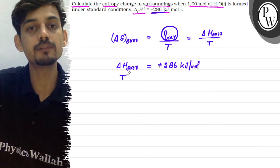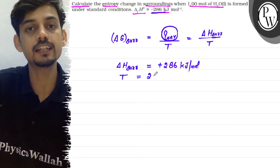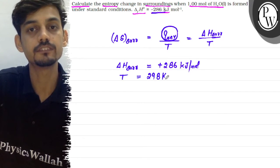At standard conditions, the temperature is 298 Kelvin. Now we can calculate delta S for surroundings.